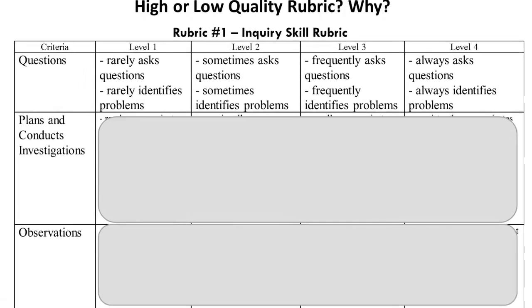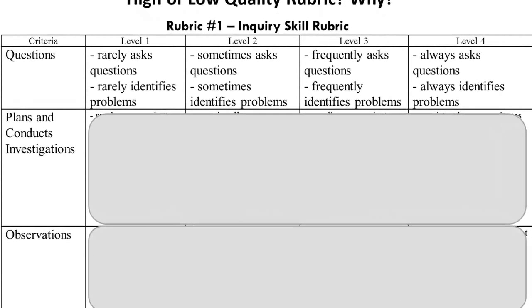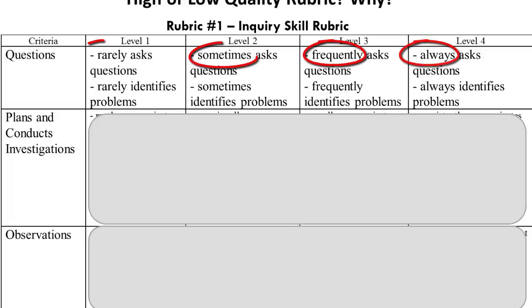Let's start with the first row: questions. Upon closer inspection, we see that the criterion refers to both asking questions and identifying problems. On the surface, it may appear that the rubric is clear — each level is clearly delineated by a descriptor: always, frequently, sometimes, rarely. So does this criterion about questions have to do with quantity of questions and problem identification?